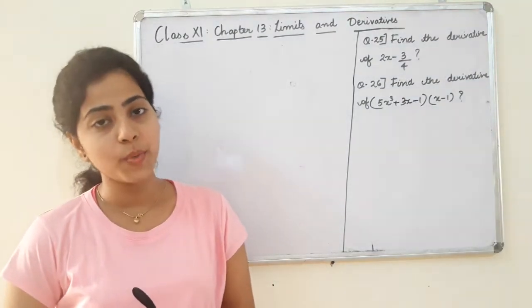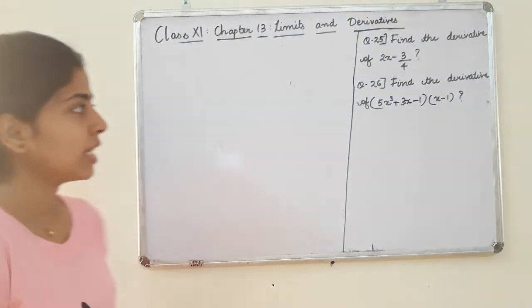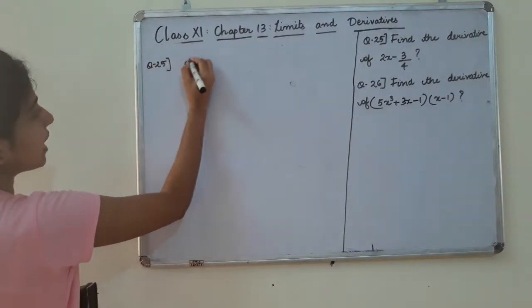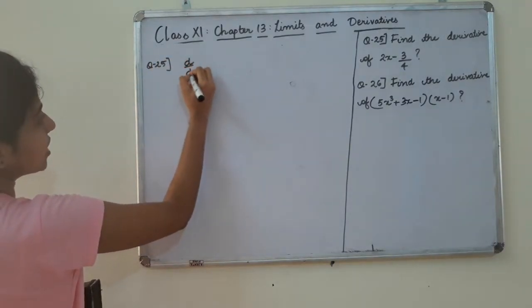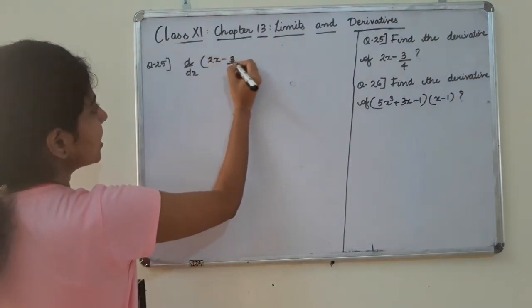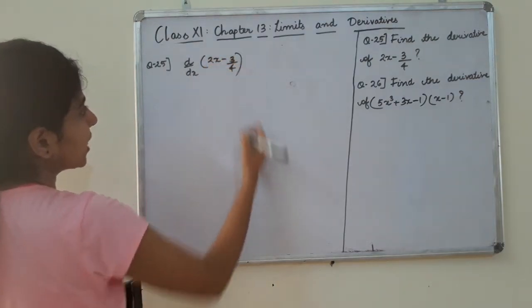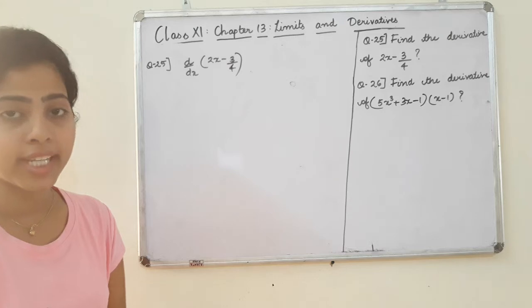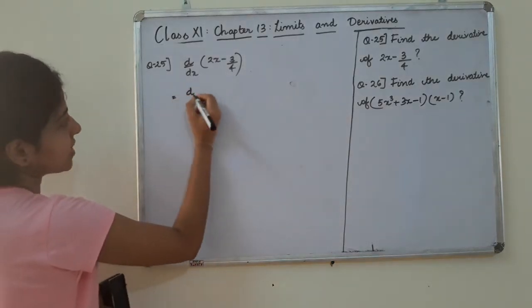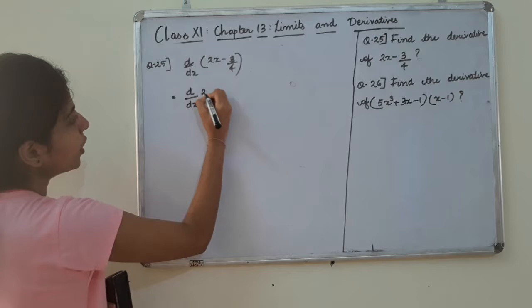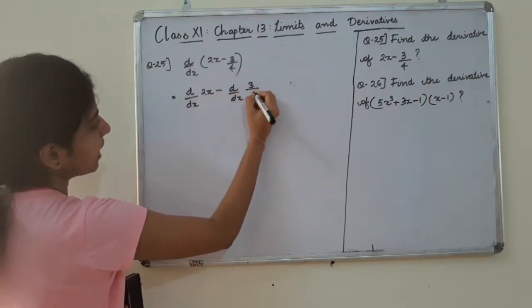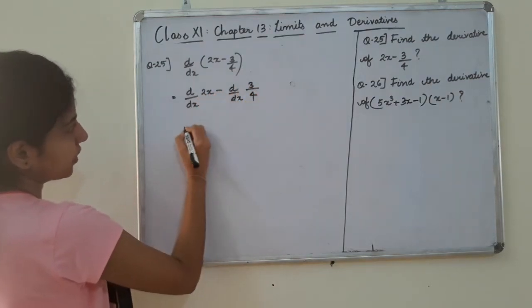Okay, we have some questions. Question number 25. Find the derivative of (2x minus 3) by 4.